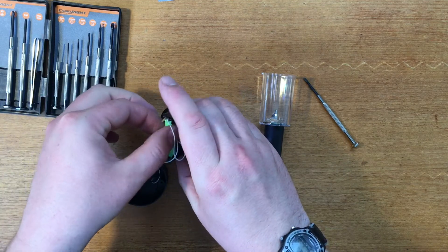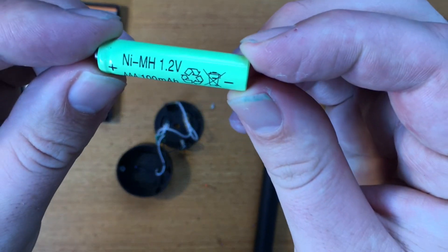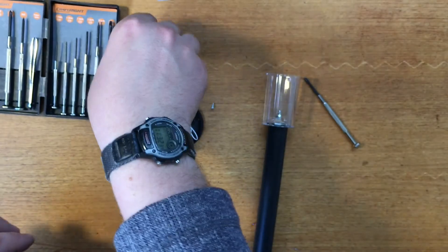1.2 milliamp-hour, 100 milliamp - that's tiny. I'm used to my 18650 batteries.